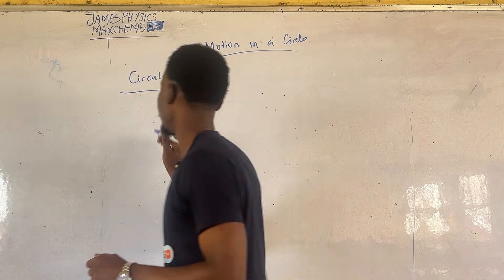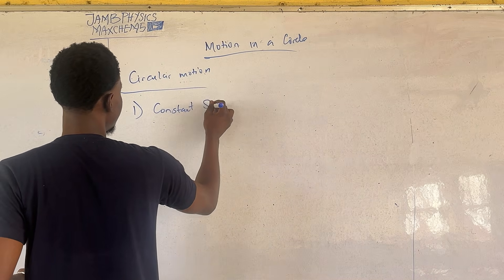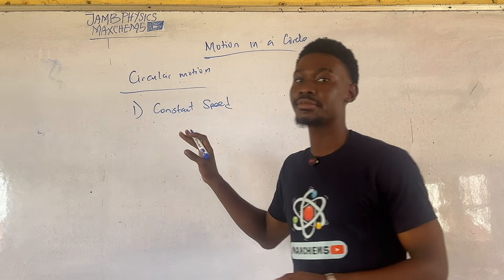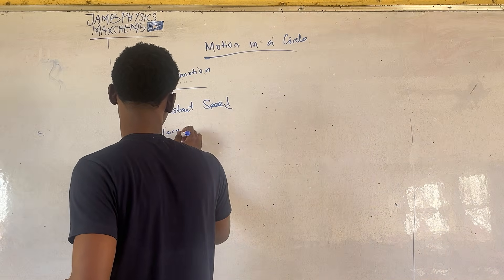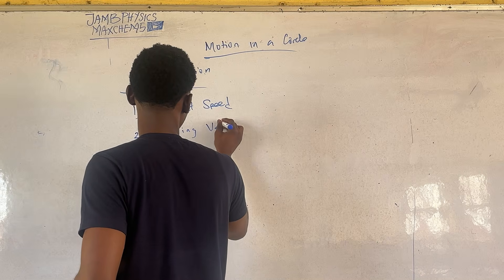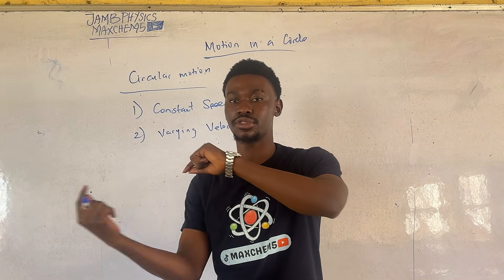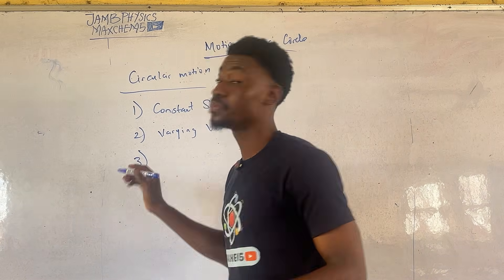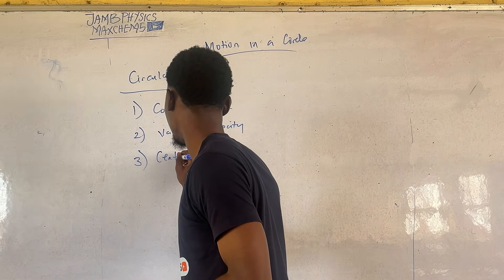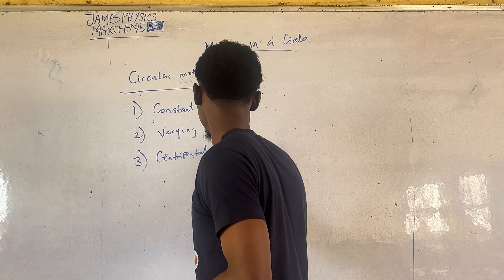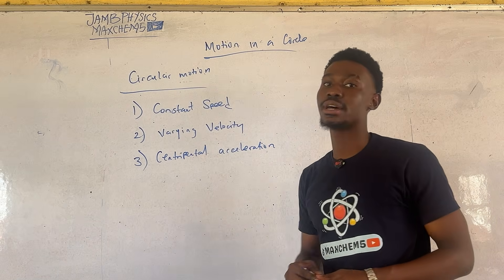Circular motion basically has three traits. First, it has constant speed — for an object to be in circular motion, it must have constant speed. Second, it has a varying velocity. The reason it can have constant speed and varying velocity is because it is constantly changing direction. The third trait is that it must have centripetal acceleration.